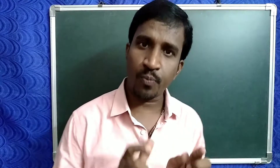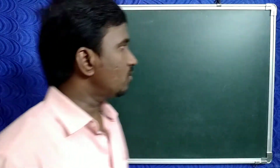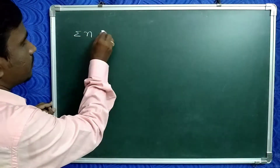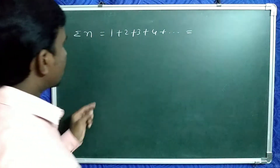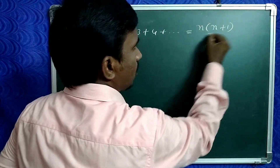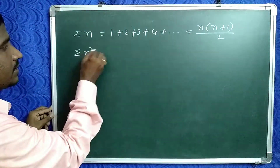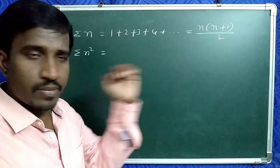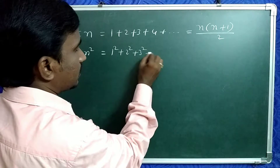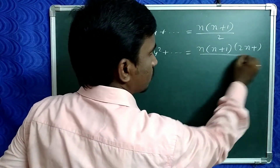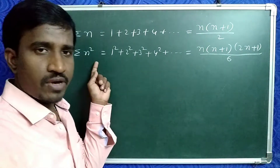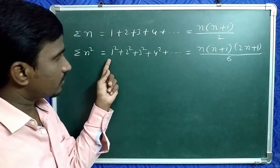Hi guys, welcome back to our channel. In this video we're going to discuss some different proofs — specifically the sum of squares of first n natural numbers, meaning σn². You all know σn means the sum of first n natural numbers: 1+2+3+4+... with formula n(n+1)/2. Now σn² means the sum of squares of first n natural numbers: 1²+2²+3²+4²+..., and it equals n(n+1)(2n+1)/6.